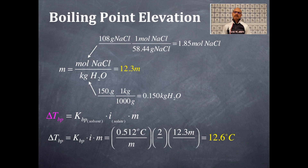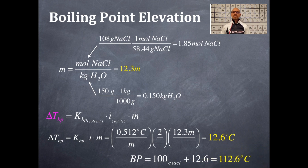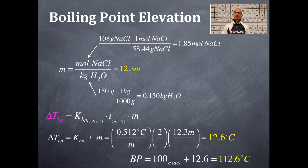This 12.6 degrees Celsius is the change in temperature of the boiling point. The boiling point of the solvent was 100, and since it's a boiling point elevation it's a plus sign: 100 plus 12.6 gives 112.6 degrees Celsius. So if I have 150 grams of water and add 108 grams of sodium chloride, it will not boil until it reaches 112.6 degrees Celsius — a pretty high boiling point, which is why it's called boiling point elevation.